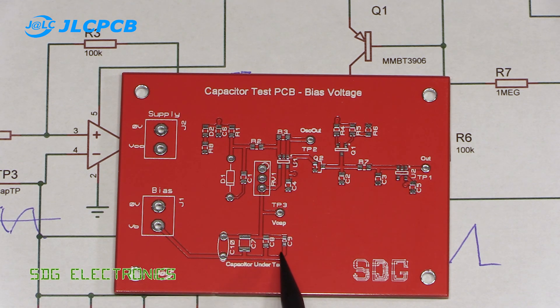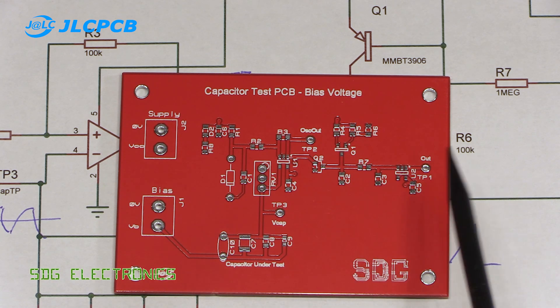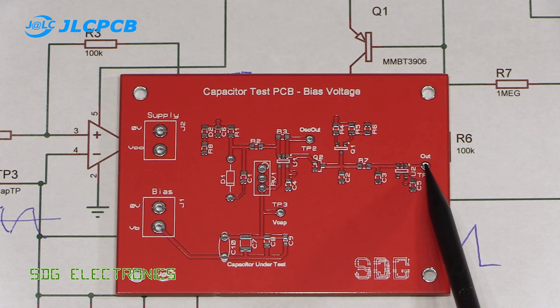This PCB is one made by JLCPCB and this is the first red PCB that I've had made. The solder mask gives really good coverage on this particular board. Here's our bias voltage that we apply here, these are our capacitors under test. Obviously we only test one at a time but I laid out a few different footprints. And then here's our DC output which gives the proportional voltage based on what the capacitance value is.